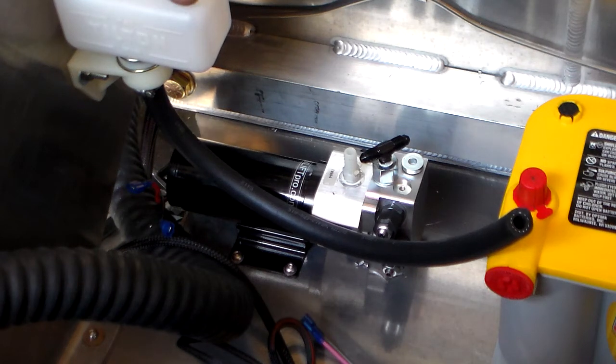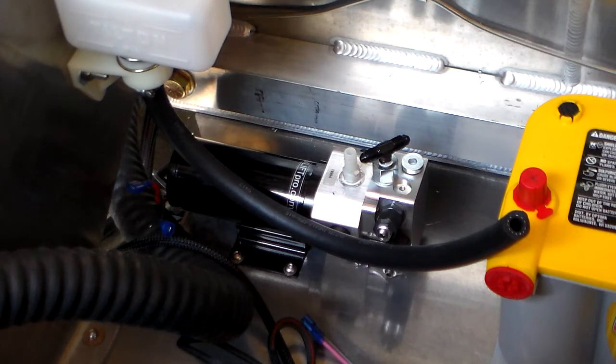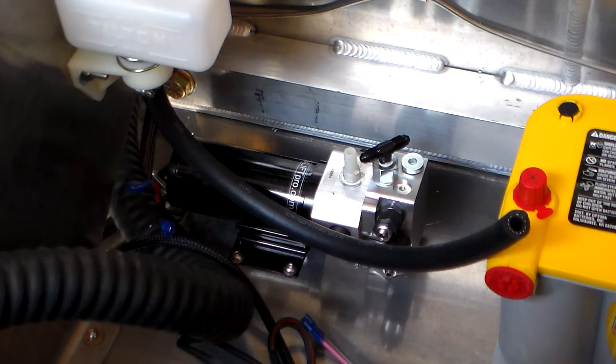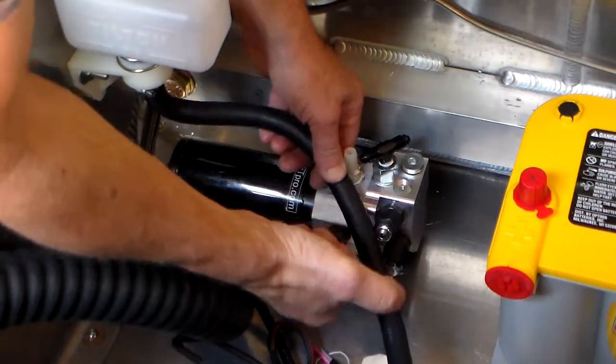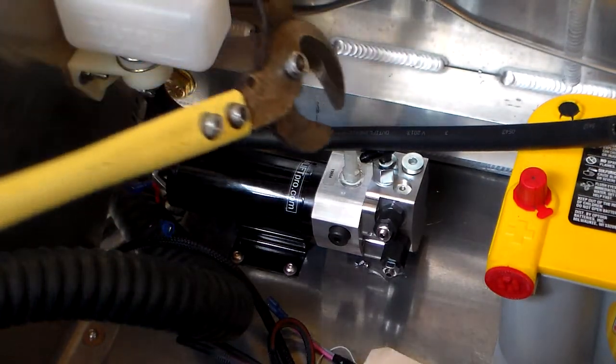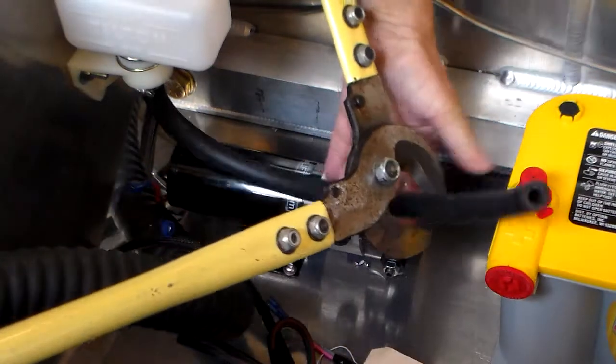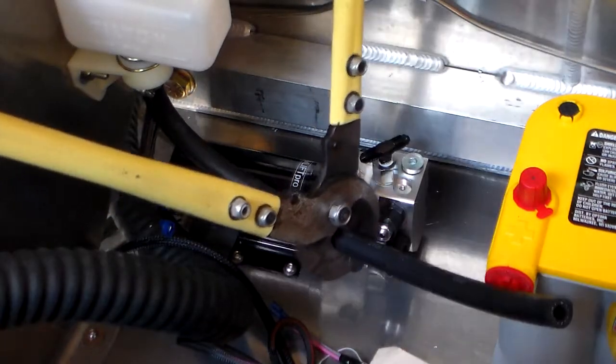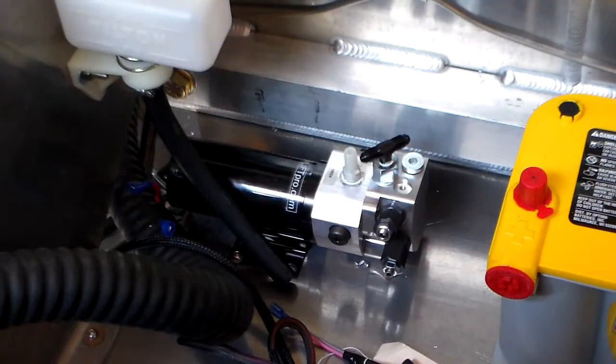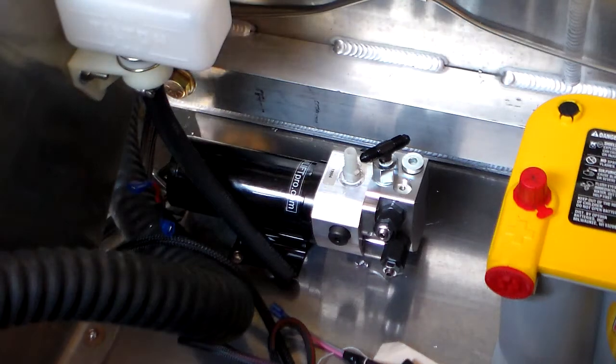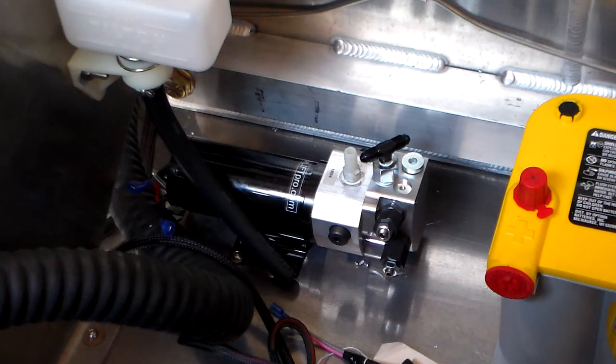With these remote reservoirs it's nice because you could position this anywhere that you have room, which in these cars you can run out of room pretty quick. And this cutter is definitely not necessary for this hose, it's just convenient because it's what I use for the stainless steel fuel lines, cuts them nice and clean.